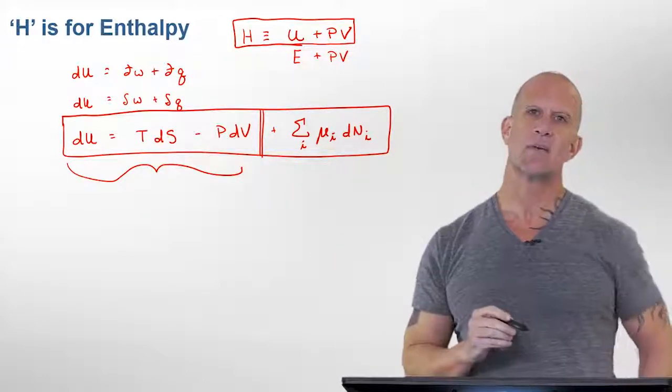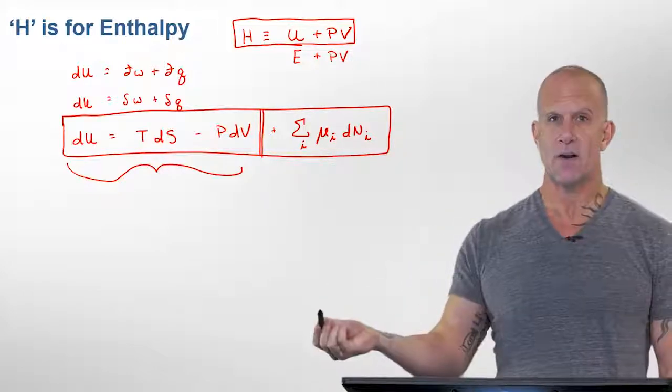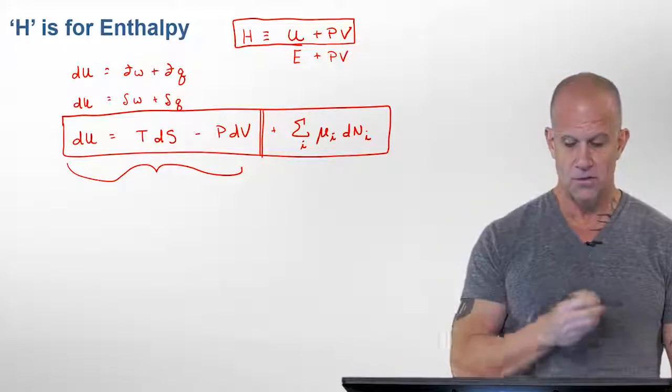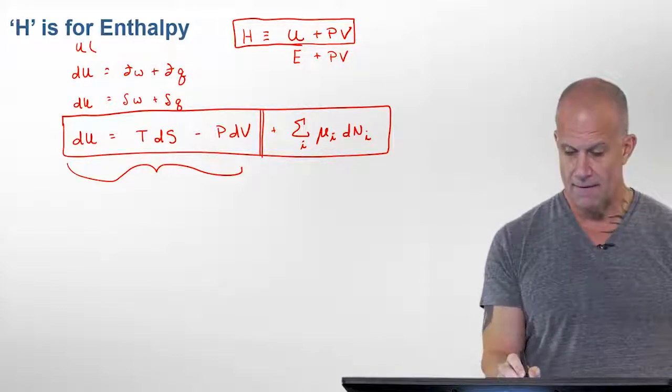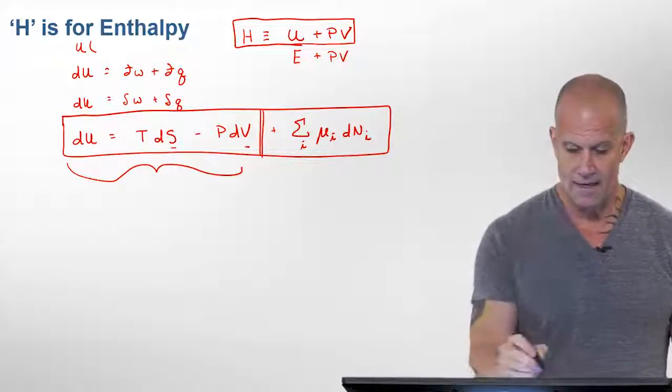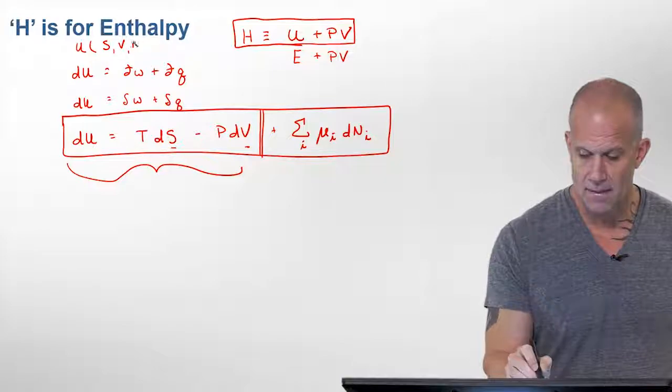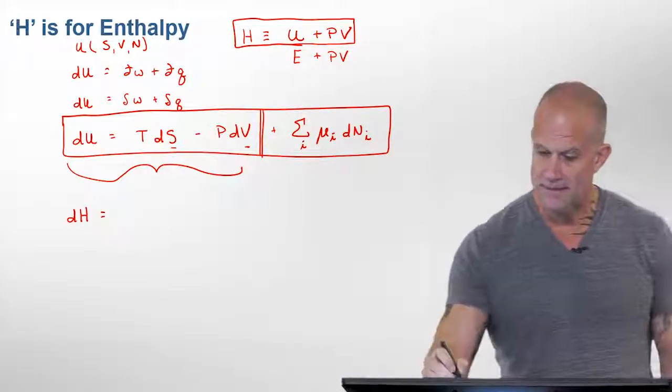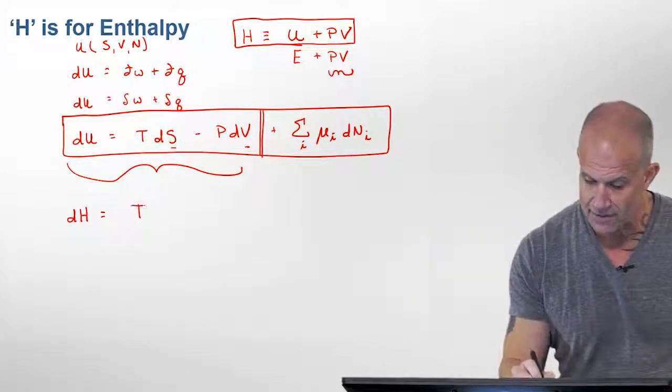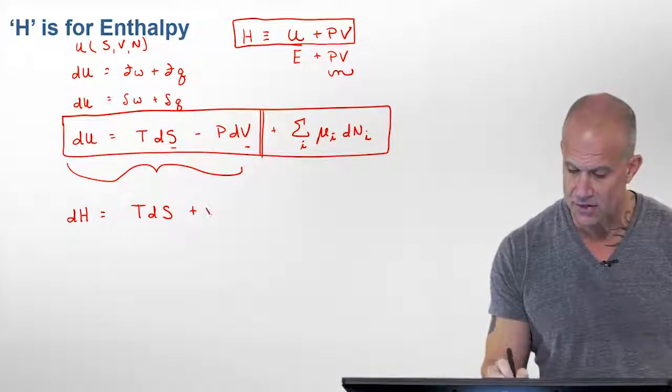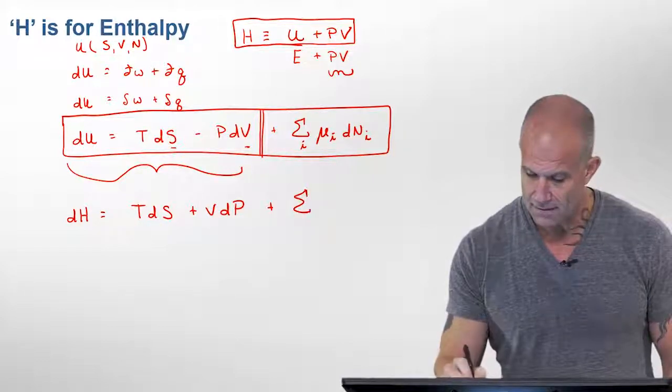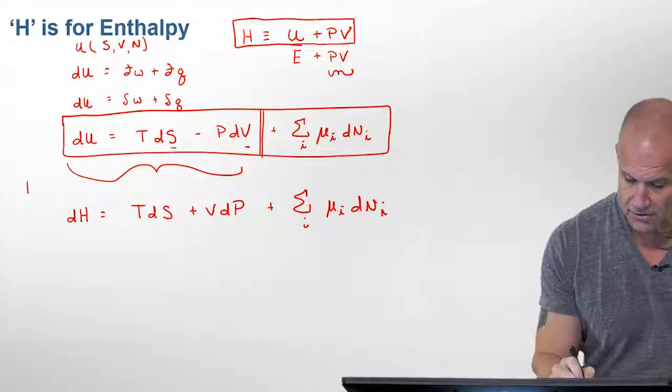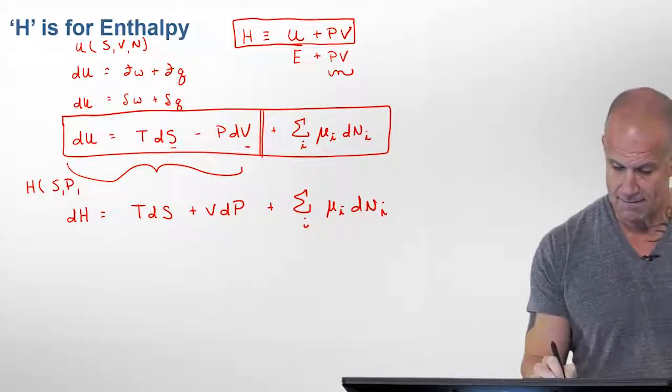And what this does, and we have a separate video on this, is it in a sense changes the dependent variables through a Legendre transform of this. What we'll show is some of the practicality. So U is dependent. Its dependent variables are S, V, and N: the entropy, the volume, and the number of moles. So what H is, is changing those dependent variables. Specifically, the mechanical one. So it's leaving the heat term the same, and it's changing this mechanical variable. So now, H is dependent on S, P, and N.